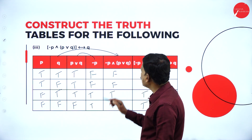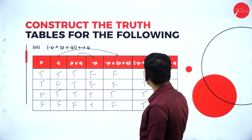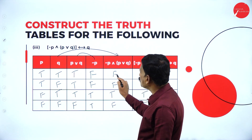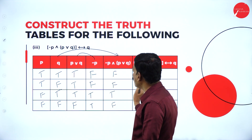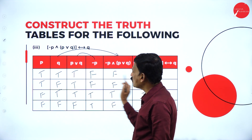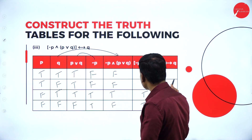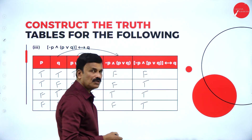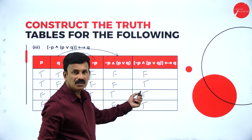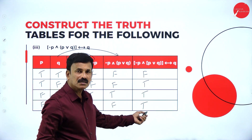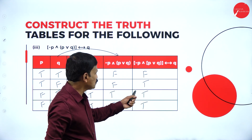The biconditional for negation P conjunction P disjunction Q, biconditional to Q gives: false and true is false, false and false is true, true and true is true, false and false is true. If you observe carefully, this is also an example for neither tautology nor a contradiction, because the last column contains false, true, true, true.